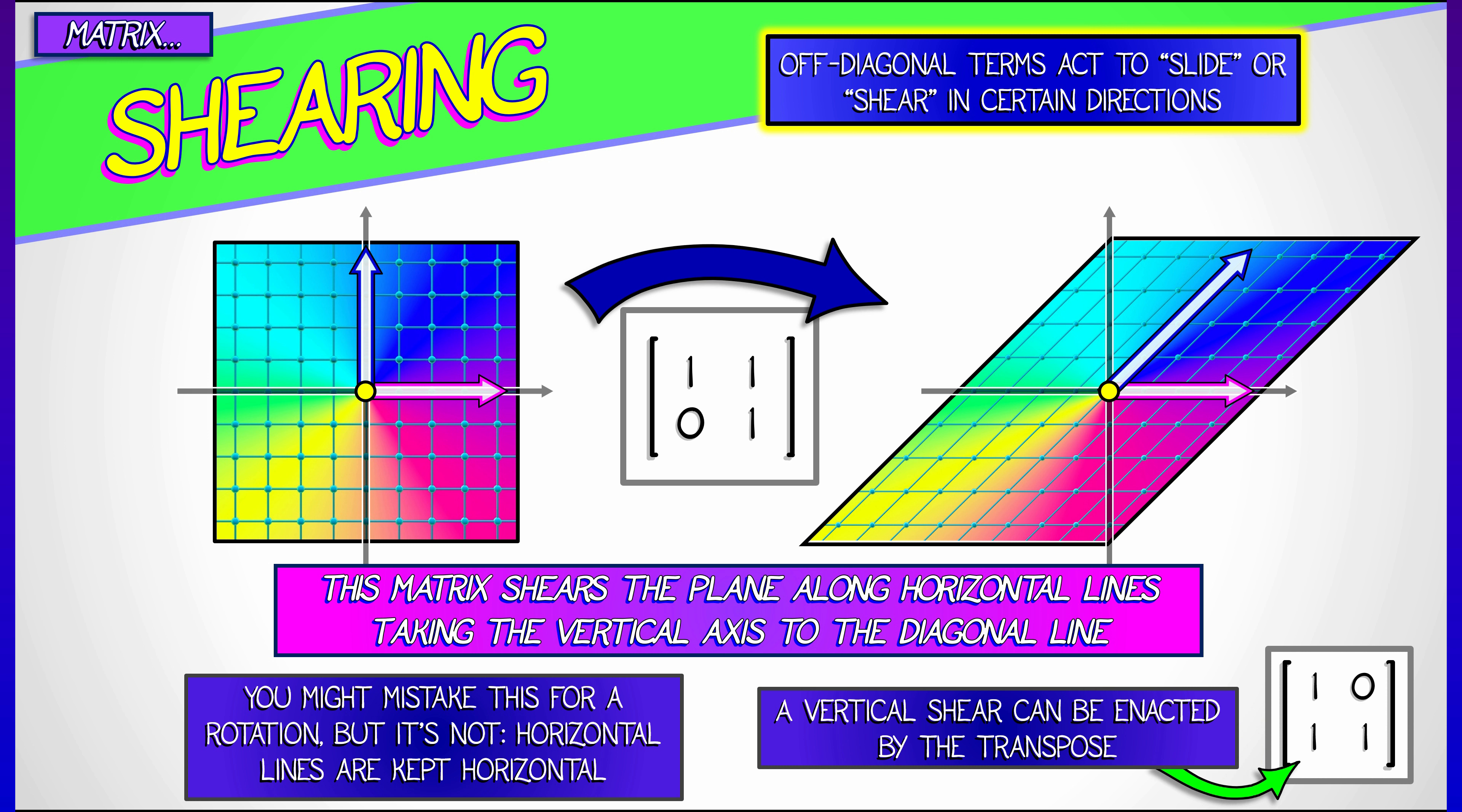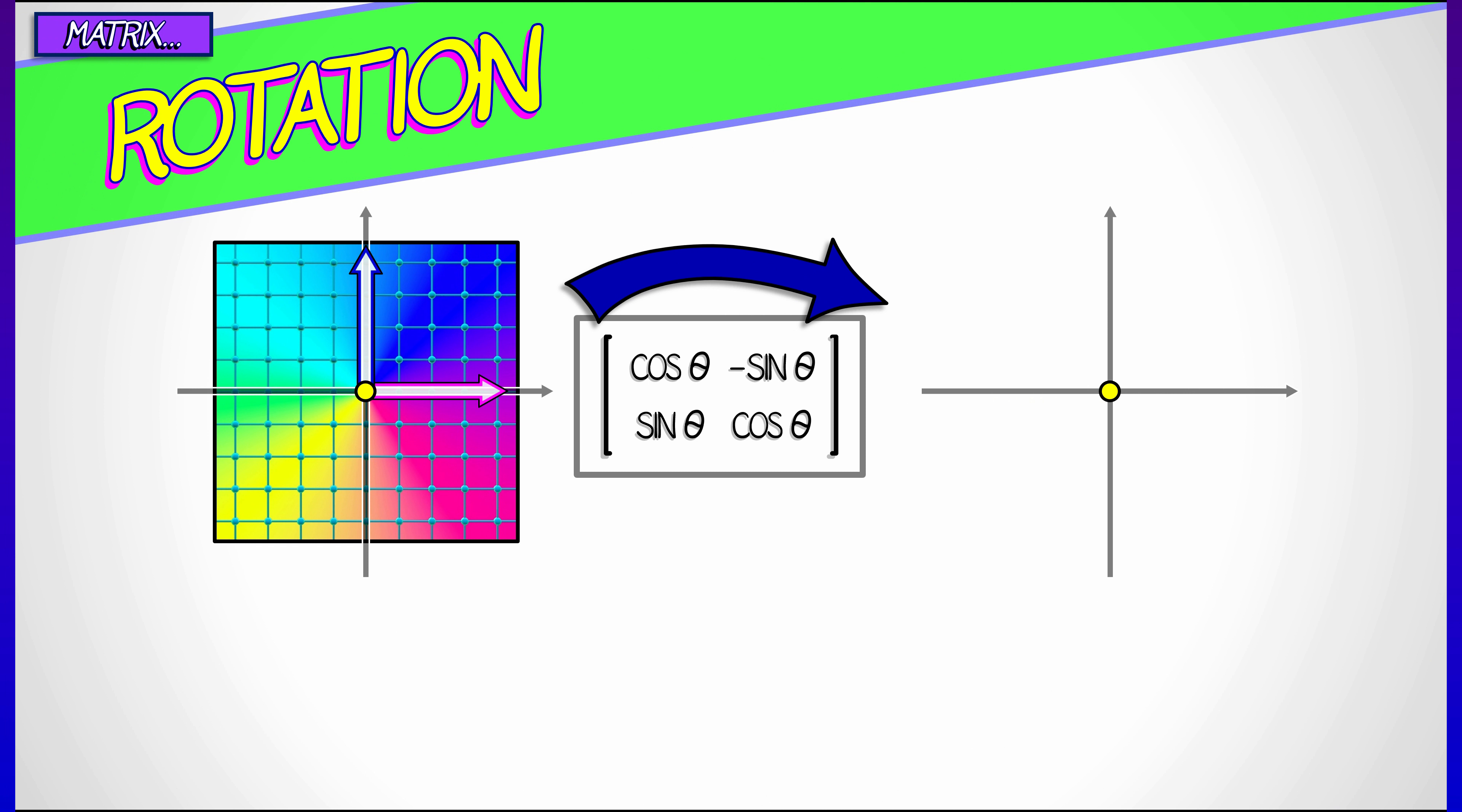Now, there are other types of shears. If you want to shear vertically, then you could just take the transpose of this matrix. That would affect that type of shear. Okay, last class we're going to look at. Very important.